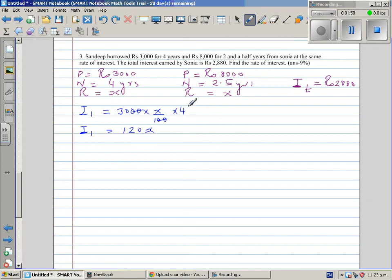Your I2. So let me do it here. Interest in the second situation would be 8,000 times 2.5 over 100 times, no, your rate of interest is x. So this is x over 100. And 2.5 I'm writing as 25 over 10. So this 100 and 0 gets cancelled. So your I2 is 25 times 8 which is 200x.